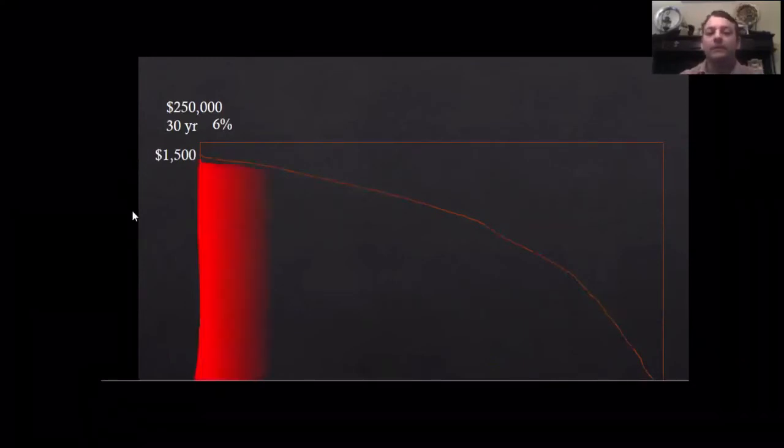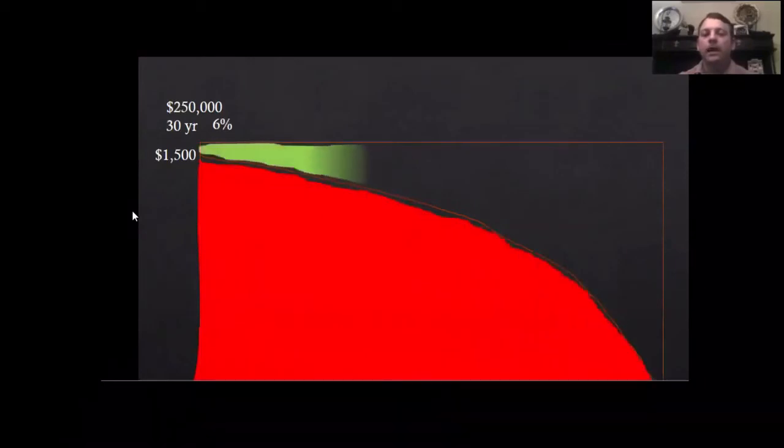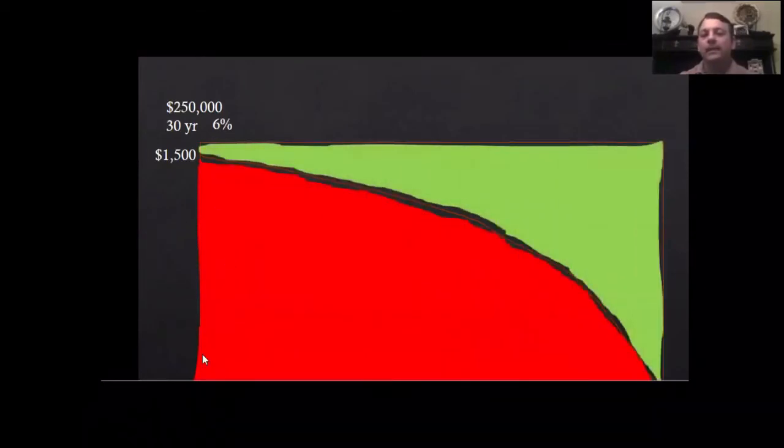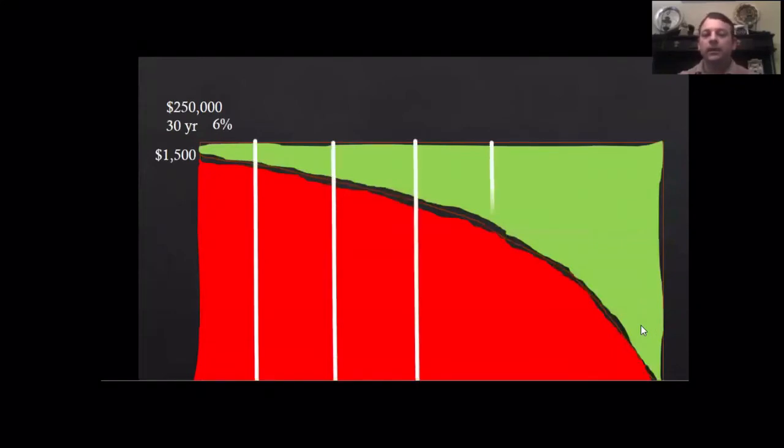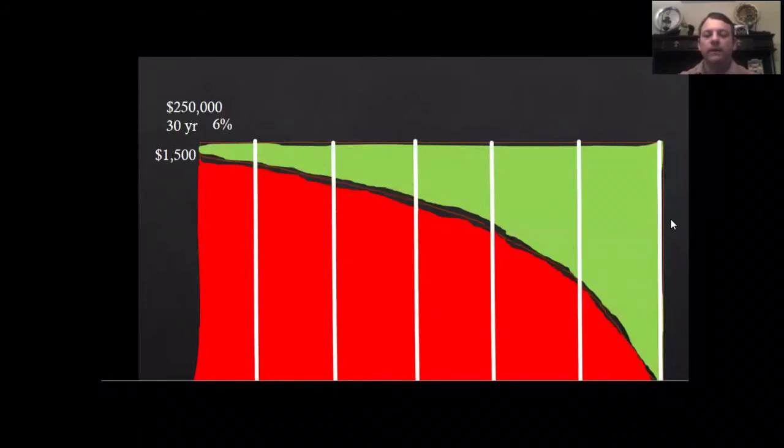When we look at it over time, the red area is the interest we spend per payment while the green is the principal. The very first payment we make on a home has very little going to principal—the majority goes to interest. But as time goes by, more and more goes to principal until eventually it flips.